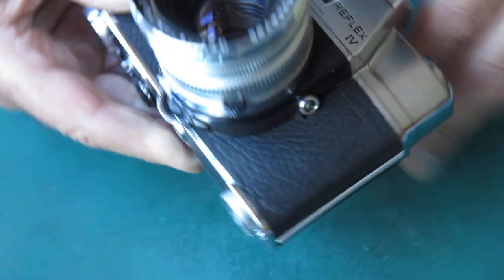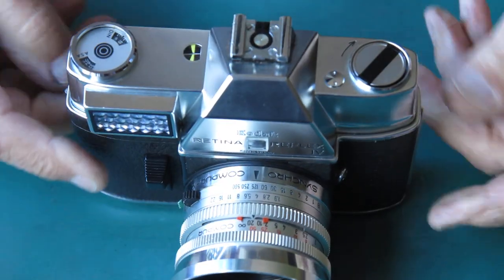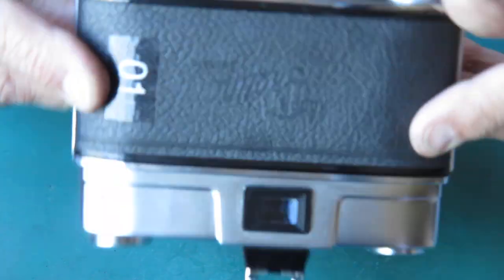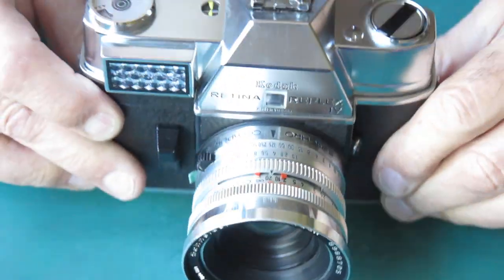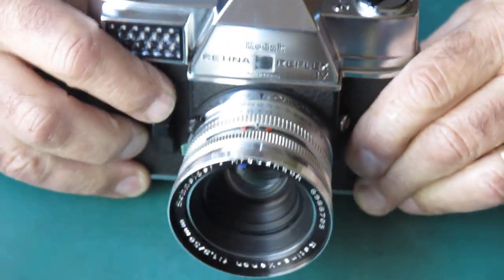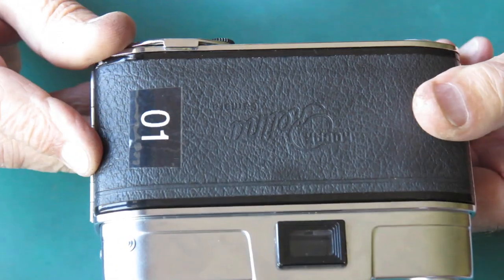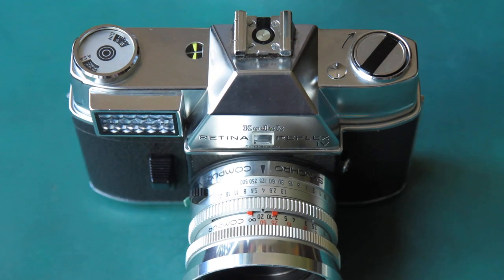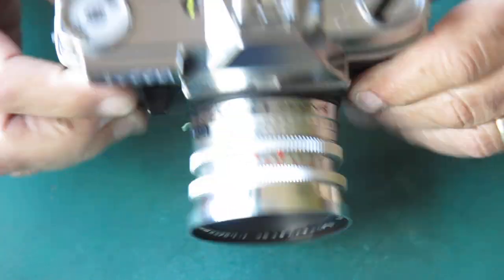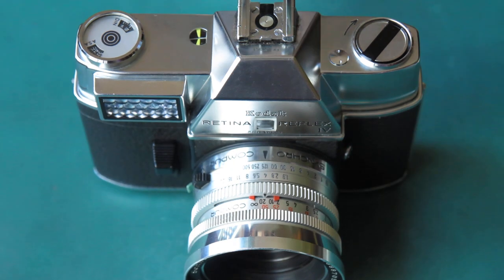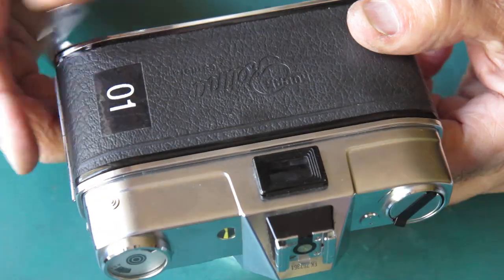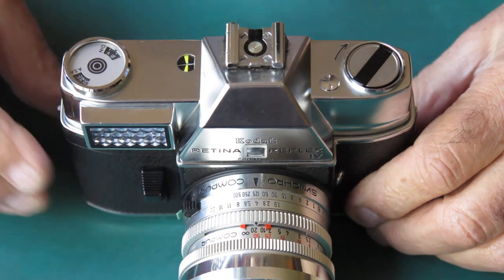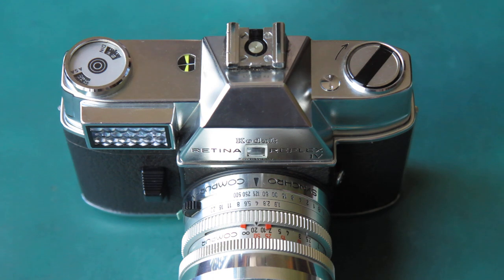Well, with that, that is our camera. That's our Retina Reflex 4. This was camera 01. And camera 02 is the next one to reach the bench. And camera 02 looks very straightforward to me. I'm not going to bother filming any of that because it'll just be a repeat of this one. And this one went pretty smoothly.